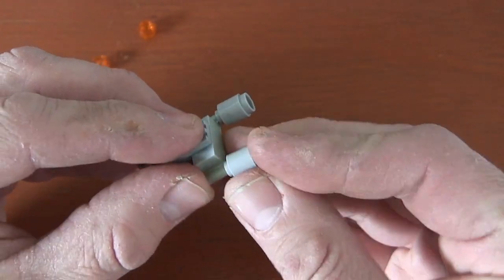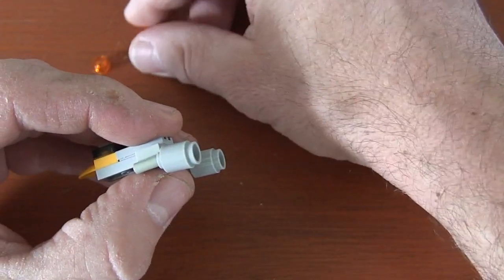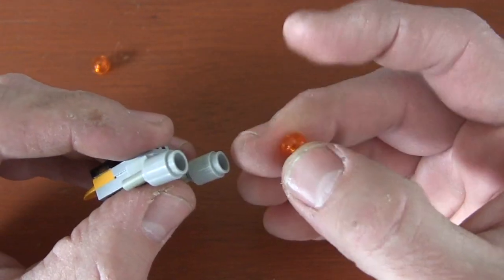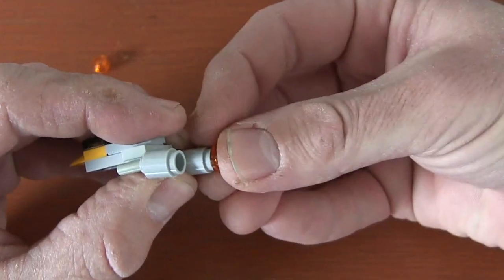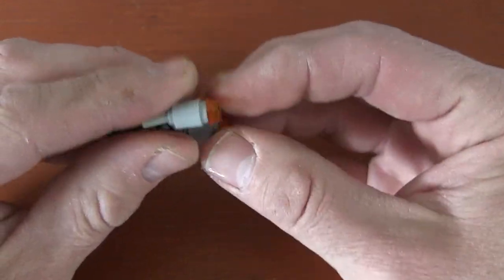To make it look like it's actually moving through space, we're gonna get these 1x1 orange translucent plates and just put them on the back of our round bricks. I really like this design for its simplicity.